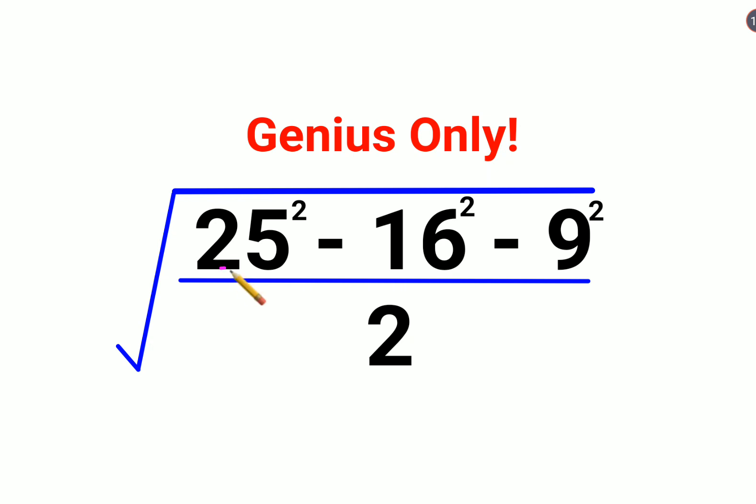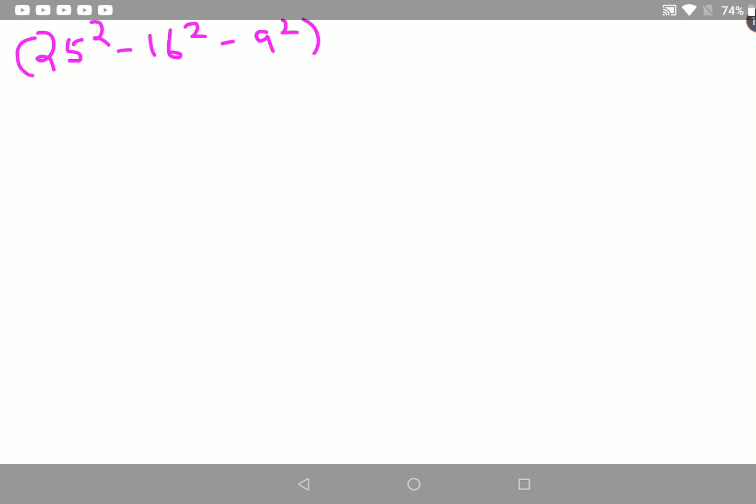So what we have is 25² - 16² - 9² upon 2. Now instead of putting them under a root and everything, let's just try to understand: 25² - 16² - 9², everything is getting divided by 2. So first let's focus on this.